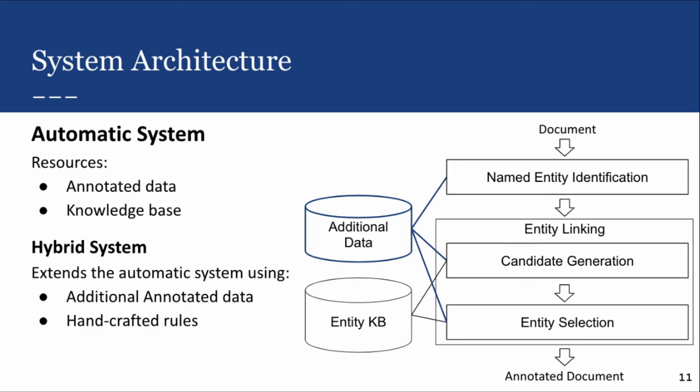To give more detail about how these systems are built: the automatic system uses a token classification model based on the language model for named entity identification, looking at every word and classifying it as part of an entity or not. Once mentions are identified they're passed to the entity linking phase, starting with candidate generation. Candidate generation uses a bi-encoder, generating context-aware embeddings for the mention with its context and for each person entry in the database. We then compare these embeddings and select the most similar person embeddings as our candidates. The entity selection module then uses the language model as a classifier to determine if the mention with its context and the person name with their description refer to the same person.